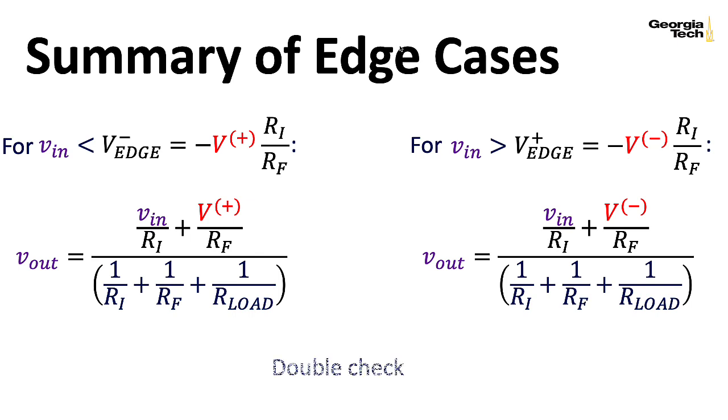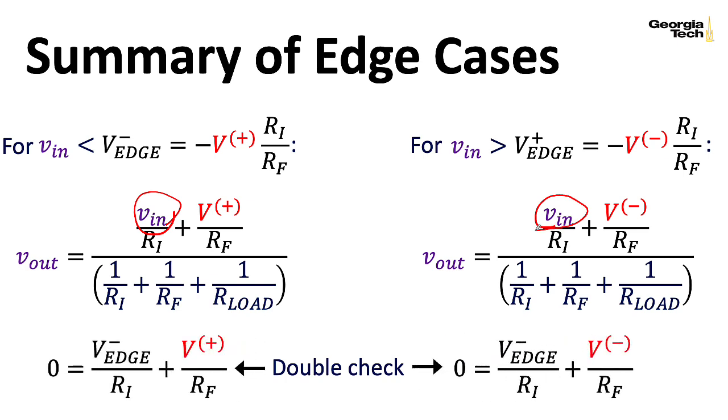Now a smart move would be to double check our results by taking these edge voltages and plugging them in for VN. And if you do that, you will find that you do indeed get zero out. So the nonlinearity is piecewise continuous. And as we've talked about before, if VN is between these edge voltages, then you do get zero out.